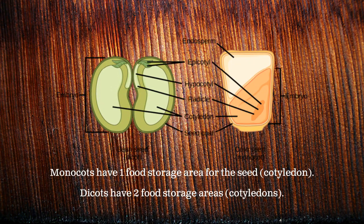Remember, mono means one cotyledon, or one food storage area for the seed, while di means two cotyledons, or two food storage areas for the seed, as illustrated in the picture.